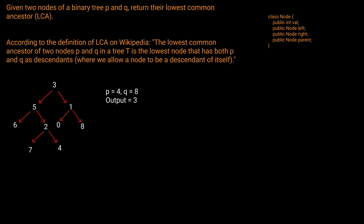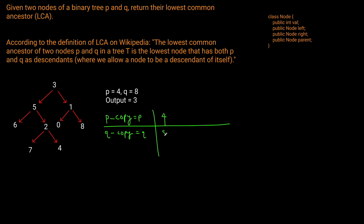What we're going to do is create two new variables: p_copy, which is set to P in the beginning, and q_copy, which is set to Q. So in our example, p_copy will be four and q_copy will be eight. What we want to do is: as long as p_copy and q_copy don't equal each other — if they're not the same node — we want to go into the parent if it exists.